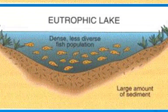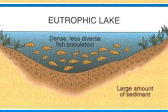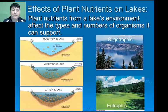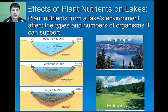Eutrophic lakes are highly enriched with nutrients and have an accumulation of organic sediments. They typically have high concentrations of algae or aquatic vegetation, but unfortunately also have low levels of dissolved oxygen in the water near the lake bottom. As a result, eutrophic lakes have a very dense but much less diverse fish population than oligotrophic and mesotrophic lakes.